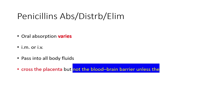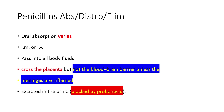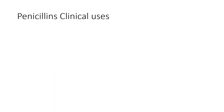Penicillins will not cross the blood-brain barrier under normal conditions. However, when the meninges are inflamed, the blood-brain barrier becomes weak and penicillins can easily cross it. Penicillins are excreted through urine. If probenecid — a uricosuric drug used in gout — is used in combination with penicillin, it competes for excretion and blocks penicillin excretion, thereby increasing the plasma concentration of penicillins.